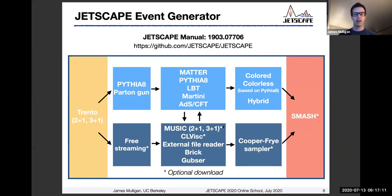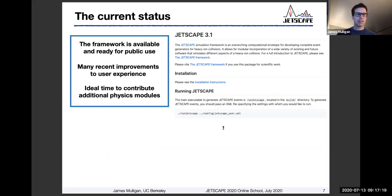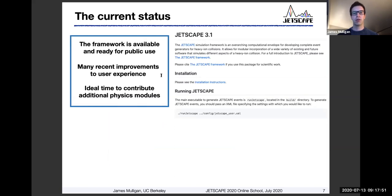We hope this list of modules will continue to expand and cover more and more physics as time goes on. In a practical sense, the status of Jetscape is that the framework is available - it's been public for some time now. The current version is Jetscape 3.1, which you can see linked from the GitHub page, and it's really ready for public use. We've put in a lot of improvements recently to the user experience, which we hope will encourage more people to use this framework. It's an ideal time to contribute additional physics modules, which we're also very eager for and eager to support.